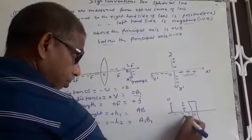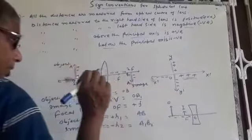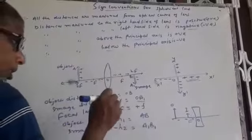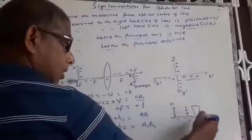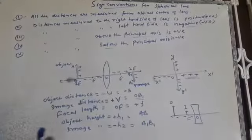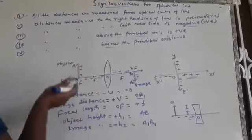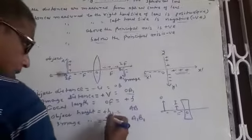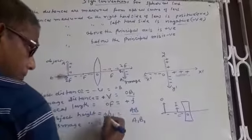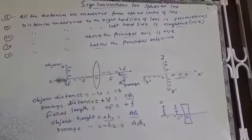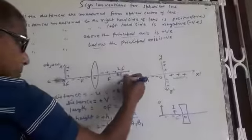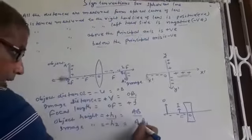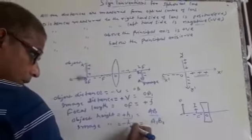For the other side, the focal length will be negative. So focal length of a convex lens is positive, and focal length of a concave lens is negative. Object height AB is the perpendicular distance above the principal axis, that is H1 — positive. Image height A1B1 below the principal axis is negative, that is H2.